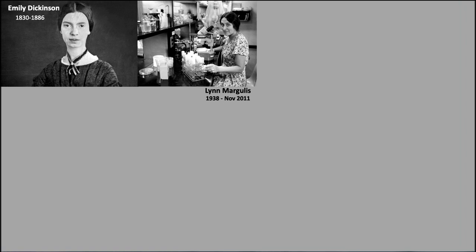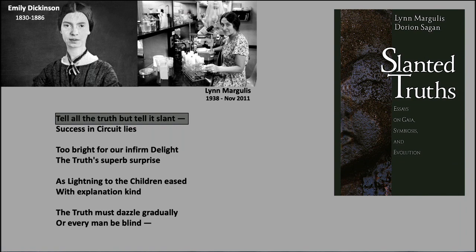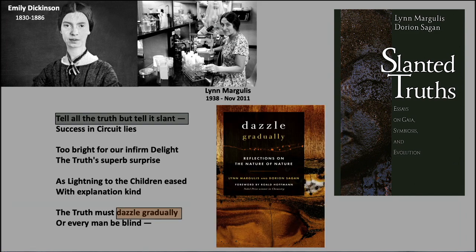Emily Dickinson wrote a poem that inspired Lynn quite a bit: "Tell all the truth but tell it slant, Success in circuit lies, Too bright for our infirm delight, The truth's superb surprise. As lightning to the children eased with explanation kind, The truth must dazzle gradually, Or every man be blind." Lynn was so inspired by this — she memorized almost all of this woman's poems — that she wrote a book based on the line "Tell all the truth but tell it slant," called Slanted Truths: Essays on Gaia, Symbiosis and Evolution. And from "The truth must dazzle gradually" came another book: Dazzle Gradually, Reflections on the Nature of Nature.